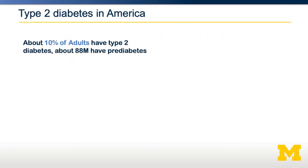About 10% of American adults have type 2 diabetes, and about 88 million American adults have what's known as pre-diabetes, which is between normal glycemia and diabetes. Many of these people who have pre-diabetes eventually transition to having diabetes. As we'll discuss, diabetes is highly connected to obesity.